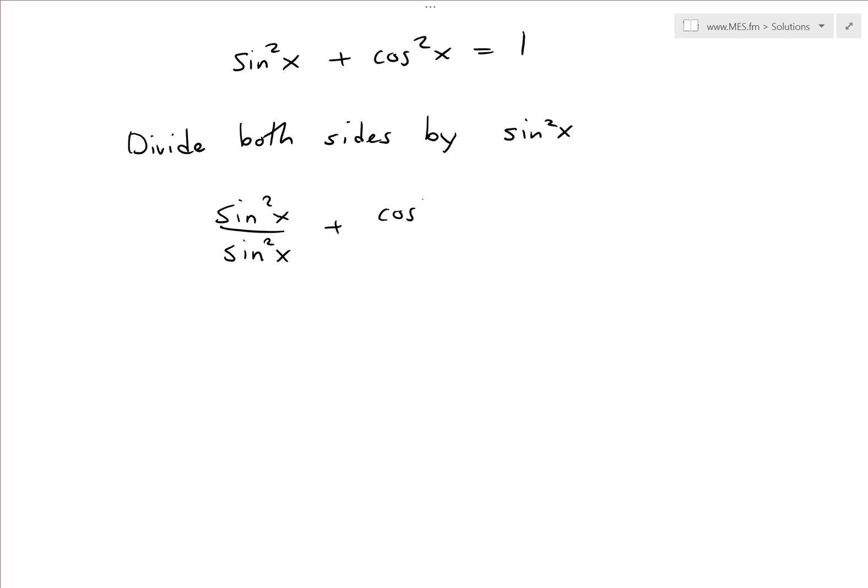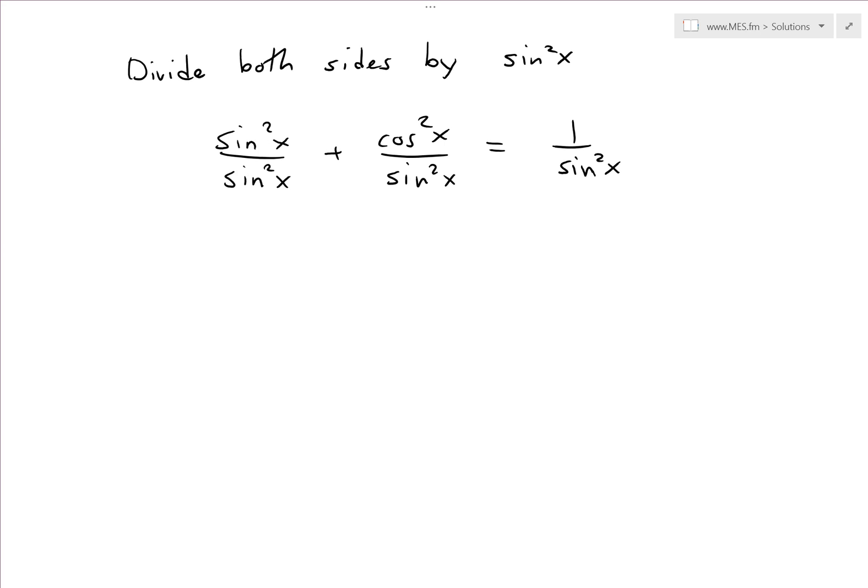So we have sin²x divided by sin²x plus cos²x divided by sin²x. Every term we divide by sin²x right here, and this one cancels, this equals to 1, and then this one is 1 over sin²x.